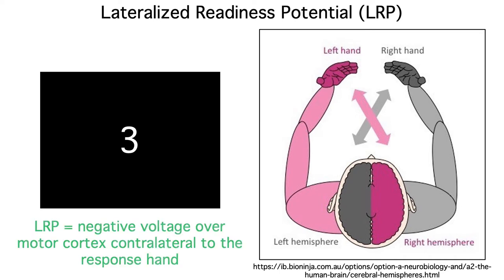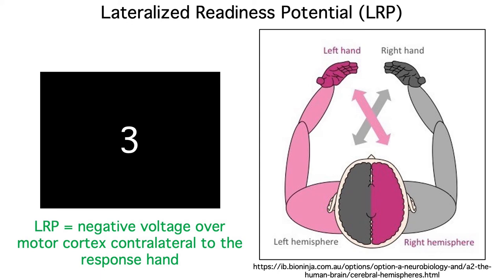And just like the N2PC, the lateralized readiness potential is a negativity over the contralateral hemisphere, except that it's contralateral to the hand that's about to respond rather than being contralateral to the location of the visual target. And it's biggest over motor cortex instead of visual cortex.